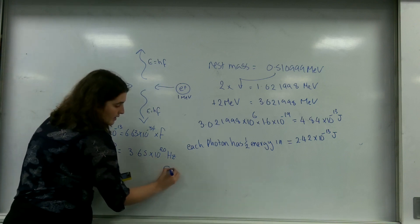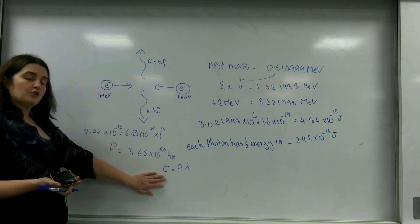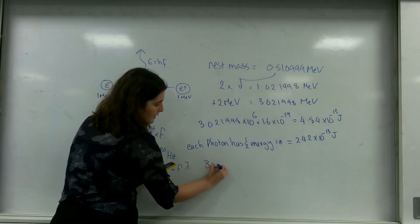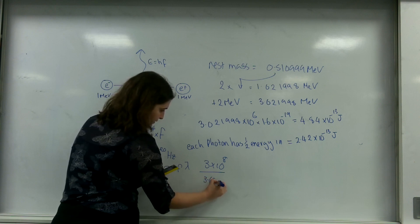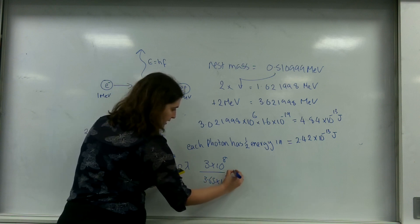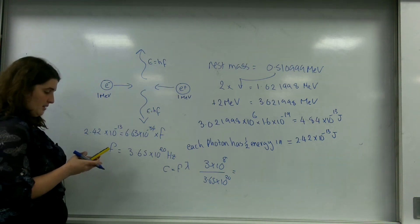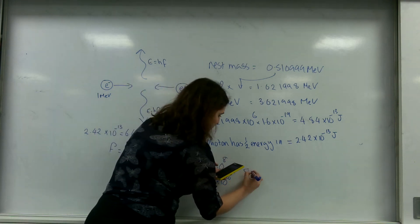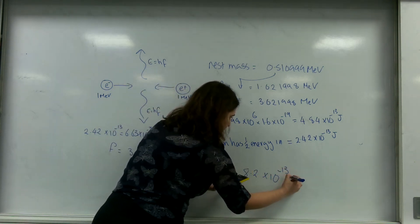I can then use C equals F lambda, where C is the speed of light, to work out the wavelength. So 3 times 10 to the 8 over 3.65 times 10 to the 20. So this is 8.2 times 10 to the minus 13 metres.